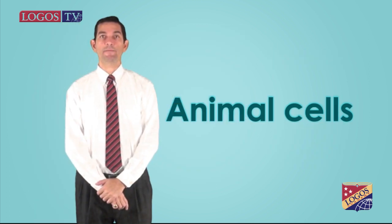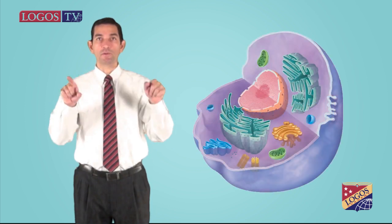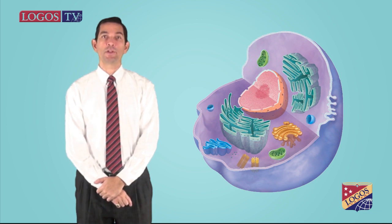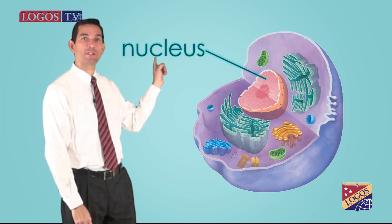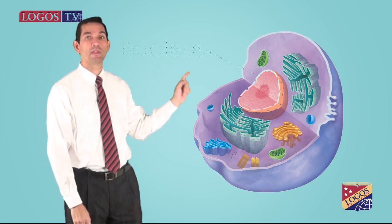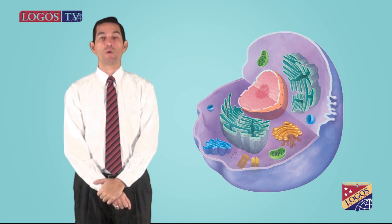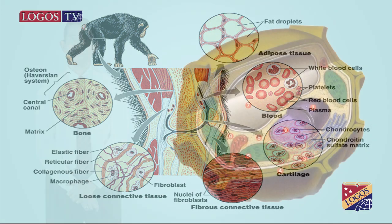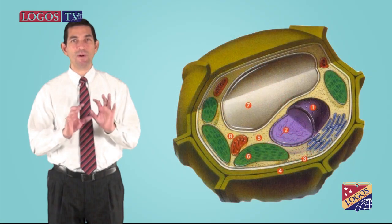Animal cells come in many different sizes and shapes but are usually round. These cells have many organelles, some different from other eukaryotic cells. Animal cells have a nucleus where the DNA material is stored, and a nucleolus. They also have small vacuoles for storage of water and waste, and vesicles that contain digestive enzymes called lysosomes. Animal cells don't have a cell wall, which enables them to develop a greater diversity of cell types and functions like motility.